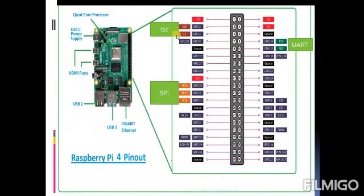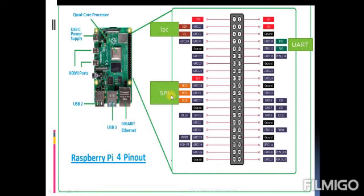Looking at the pin configuration, it consists of 40 pins — these are the GPIO pins. General purpose input output pins are numbered from 2 to 27. It also has SPI, I2C, and UART pins. All these are serial communication protocols. I2C means inter-integrated circuit, SPI means serial peripheral interface, and UART means universal asynchronous receiver and transmitter.